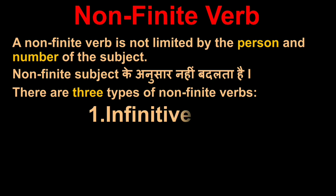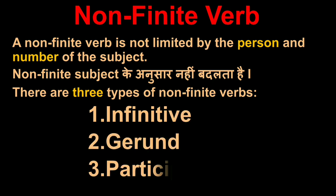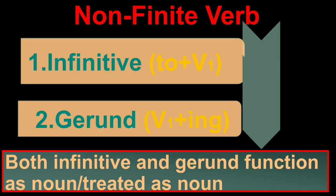First one is infinitive, second one is gerund, and third one is participle. Let us know about these. First is infinitive. How is it configured and constructed? Take V1, the base form of the verb, and add 'to' before it - that becomes infinitive. And how is gerund made? Base form of the verb plus 'ing' form, or V4, is called gerund.